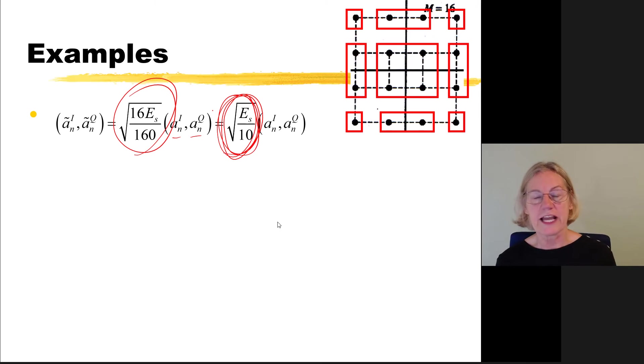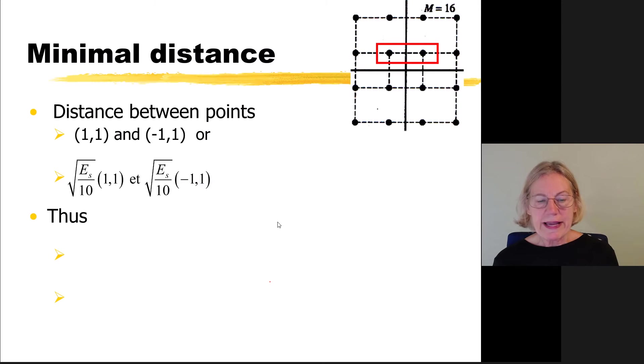So now I know the coordinates of each one of the points of the constellation. Whatever the old coordinates were, I just multiply them by this factor. And of course, I can simplify it into the square root of Es over 10. So this is the normalization factor for 16-QAM. And every QAM that I use will have a different normalization factor. I just have to find it out from the geometry. So in this case, now I can ask myself, what is the minimum distance? I know it's the spacing, which normally would have been 2. But it's not 2 anymore. Now I'm going to multiply by this normalization factor. So in fact, I get that the dmin is 2 times this normalization factor or the square root of Es over 10.